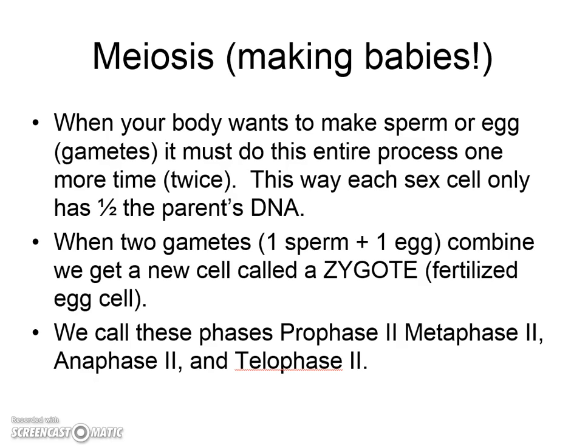Meiosis — sometimes remembered because it has M-E in the word — is when you're making little 'mees,' meaning little sperms or little eggs. They're future offspring. Think of meiosis as making my sperm or egg. This process only allows your sperm and egg to get half of your DNA, which is called haploid instead of diploid. We call those sex cells gametes. This process ends up with four cells at the end, each with only half the original DNA, so meiosis doesn't make two — it makes four.